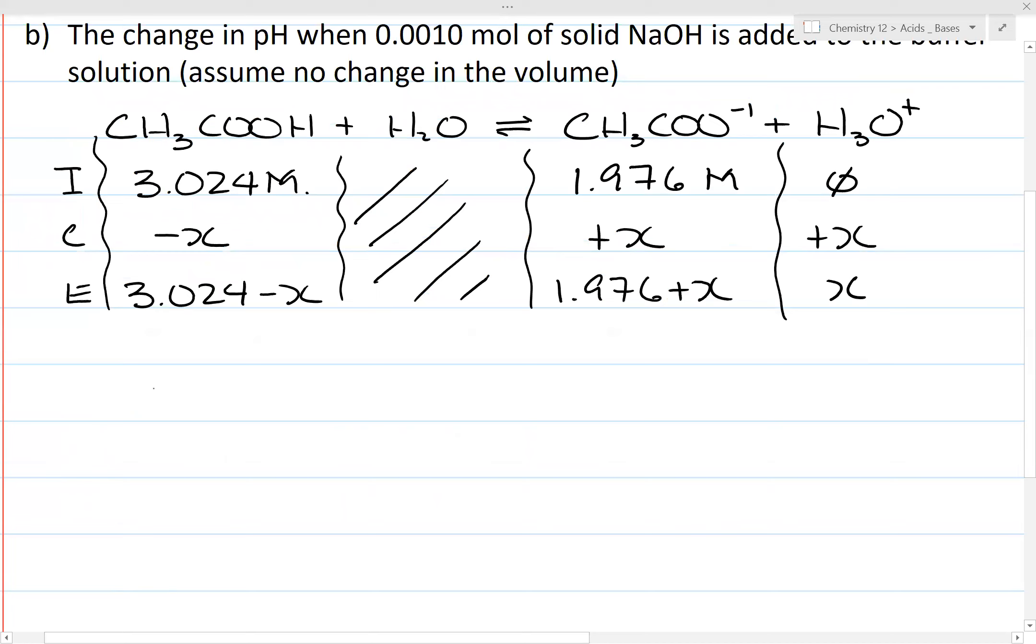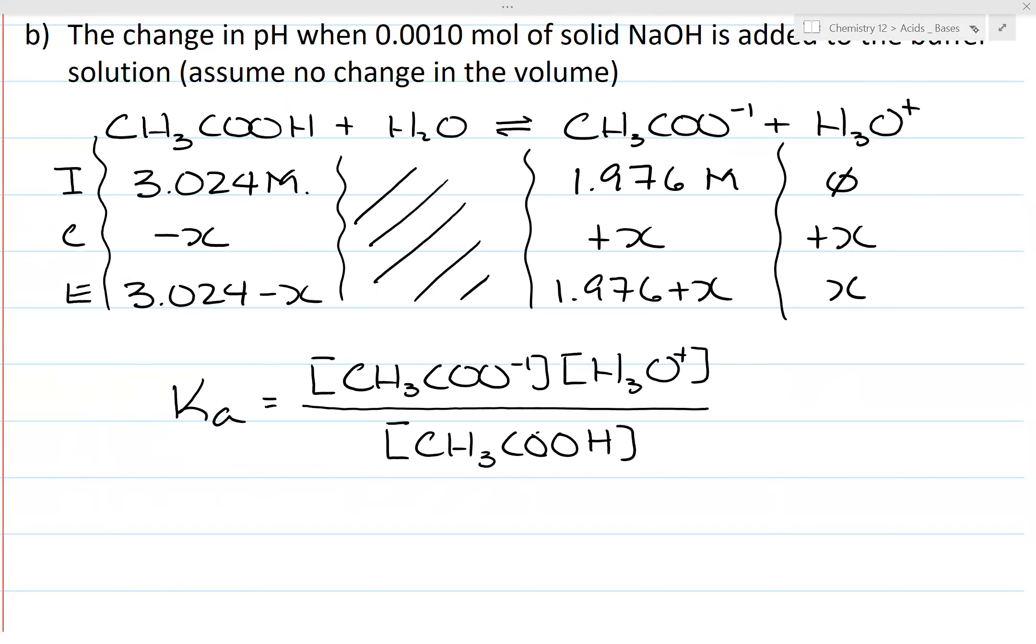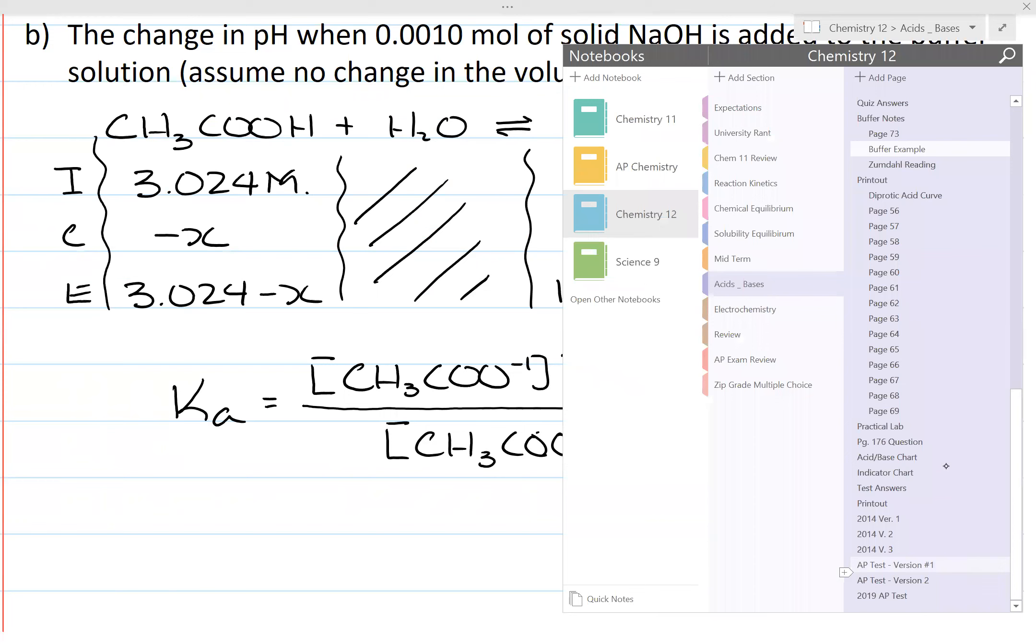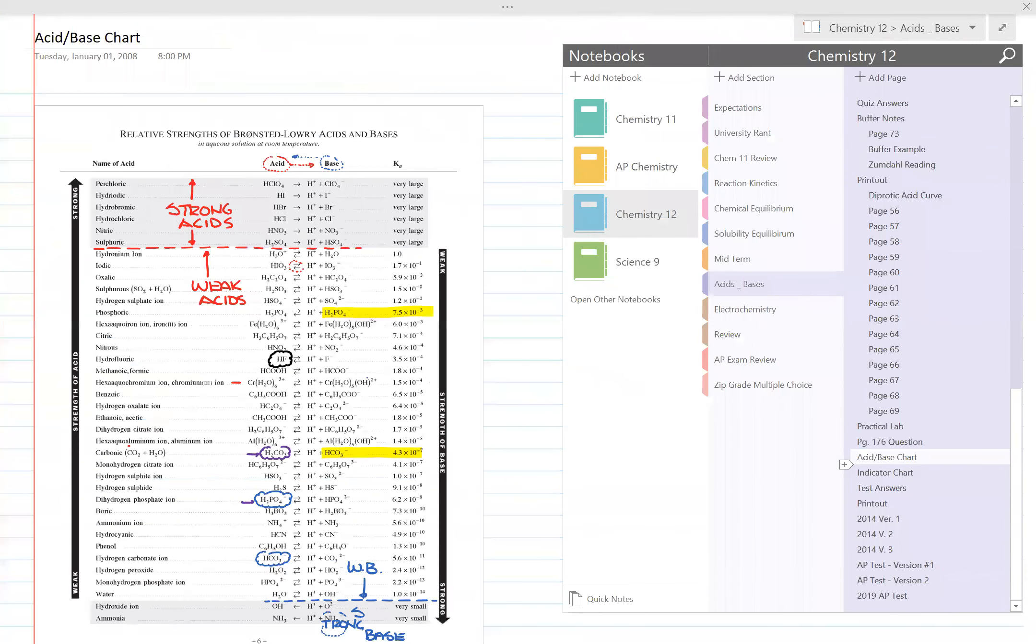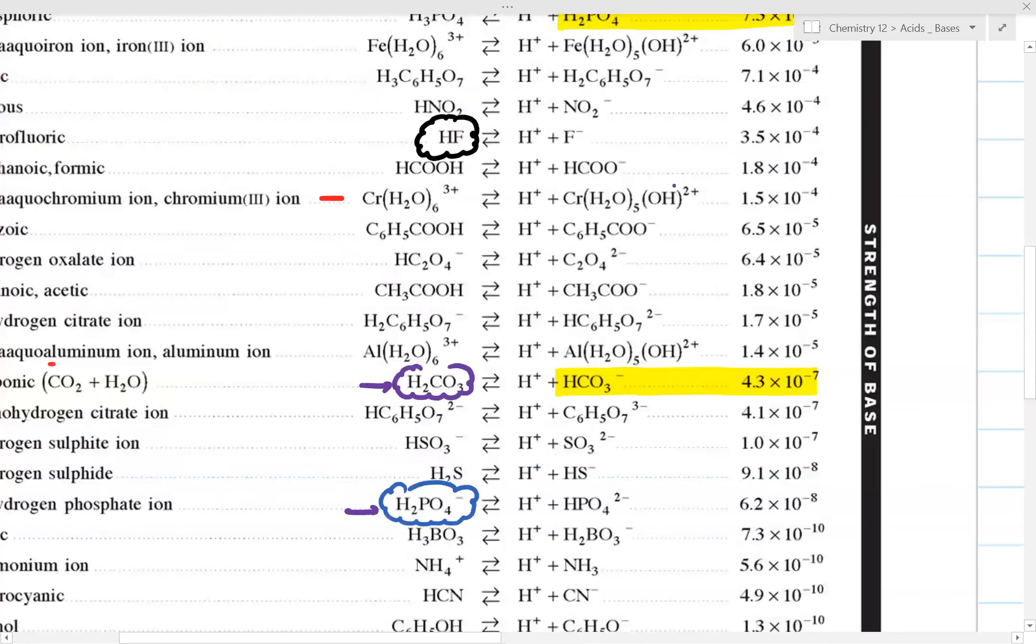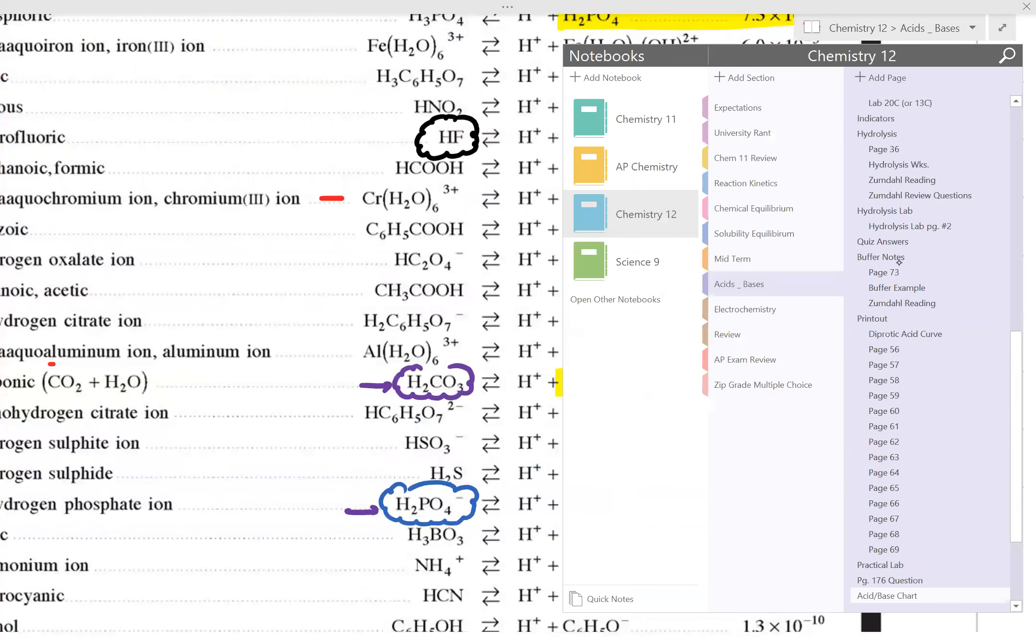So the acetate ion would be, I get 1.976 molarity. This would be 0. This would be 0. This would be minus X plus X plus X. This would be 3.024 molarity minus X. This is 1.976 plus X plus X. Now, you could set this up just like what you had done before. So you go KA is equal to concentration of CH3COO minus 1 times concentration of H3O plus all over concentration of CH3COOH.